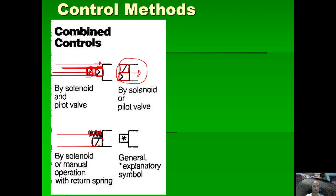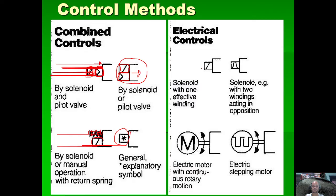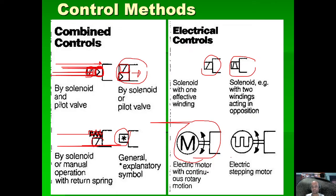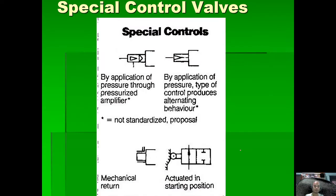Here we have a general explanatory symbol, a solenoid with one effective winding, and a solenoid with two effective windings. We have an electric motor with reversible rotation and an electric stepping motor with reversible rotation. For special controls there is actuation by application of pressure through a pressurized amplifier.